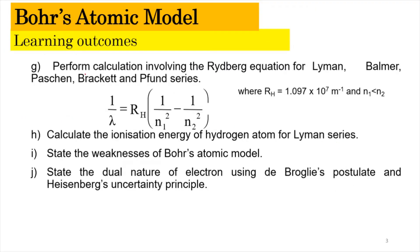In this video, we're going to focus on performing calculations involving the Rydberg equation for the Lyman, Balmer, Paschen, Brackett, and Pfund series, using the formula: 1 over lambda equals RH times (1 over N1 squared minus 1 over N2 squared), where RH is 1.097 times 10 to the power of 7 per meter, and N1 is less than N2.